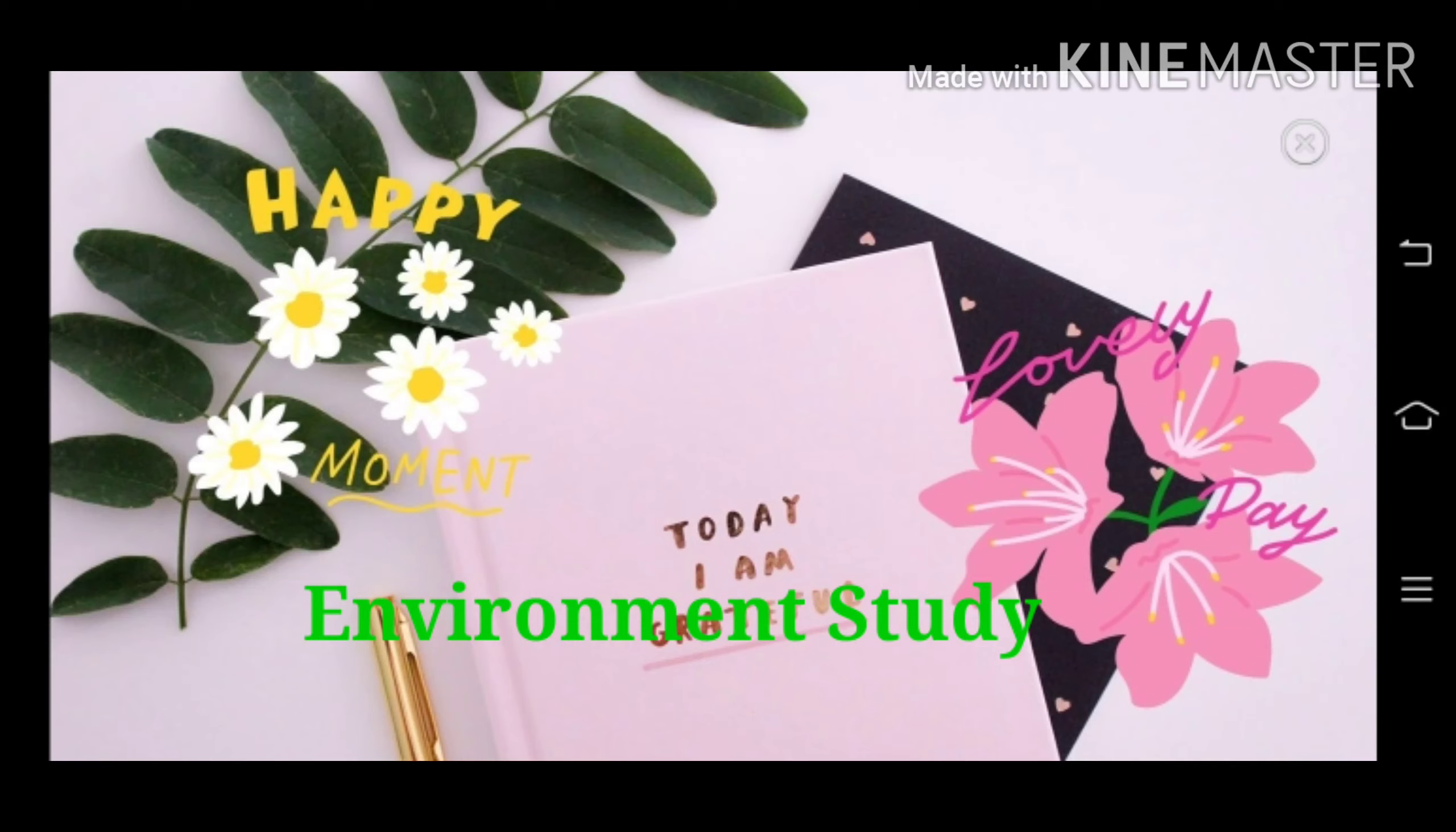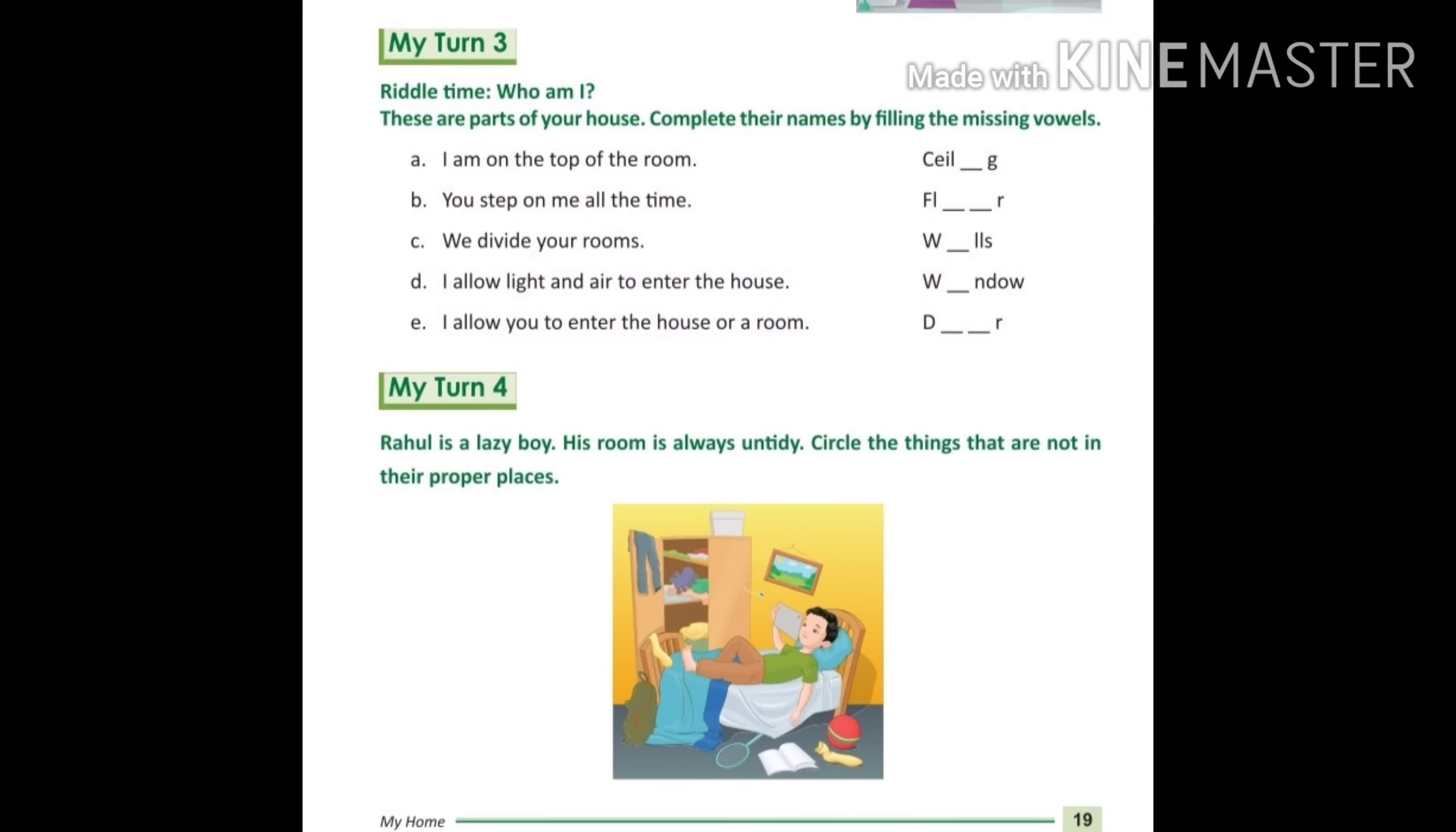Let's see in your practice book my turn 3 and 4. Riddle time - riddle means paheli. Who am I? These are parts of our house. Complete their names by filling the missing vowels. The bubbles are missing, so complete the names with the help of the bubbles.